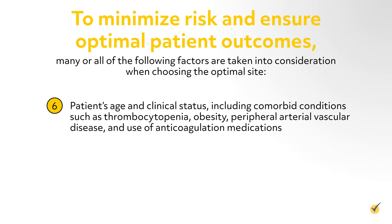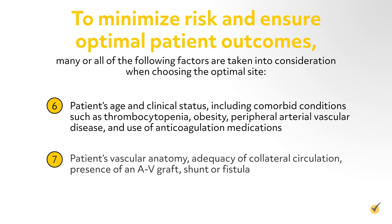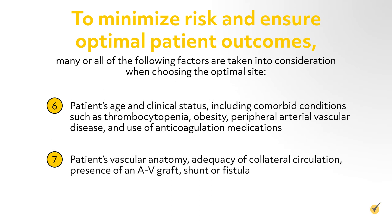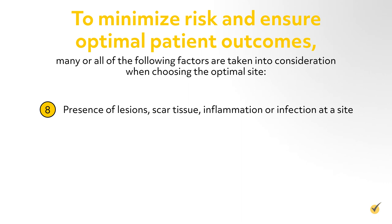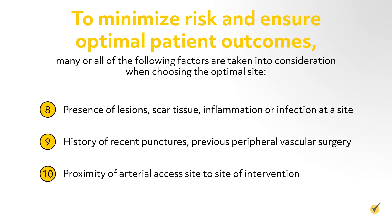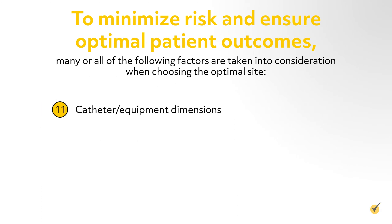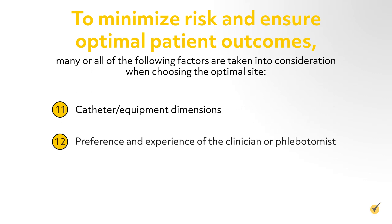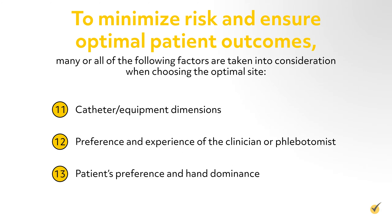Additional site selection factors include: use of anticoagulation medications, patient's vascular anatomy, adequacy of collateral circulation, presence of an AV graft, shunt, or fistula, presence of lesions, scar tissue, inflammation, or infection at a site, history of recent punctures, previous peripheral vascular surgery, proximity of arterial access site to site of intervention, catheter equipment dimensions, preference and experience of the clinician or phlebotomist, and patient's preference and hand dominance.